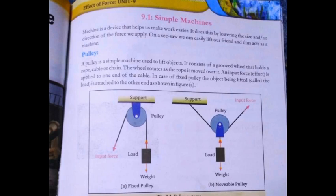Knife is, it will be easier for our work. How can we do it? It's a machine. It does this by lowering the size or the direction of the force we applied. What is this? That our size is small, or we apply the force, it is working. So this will be the effect of the machine.